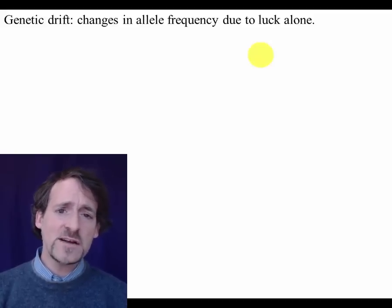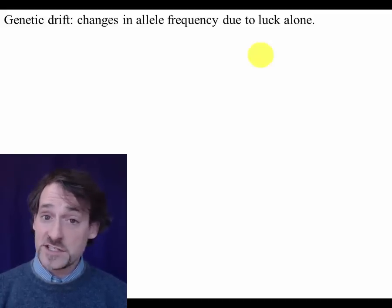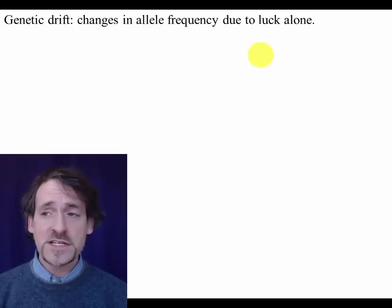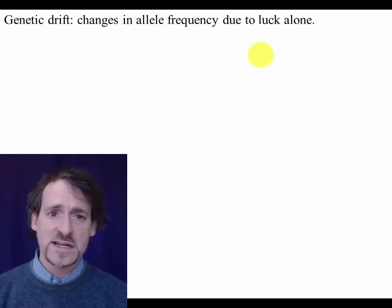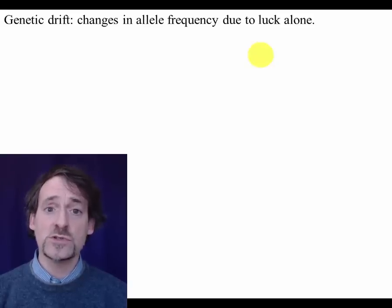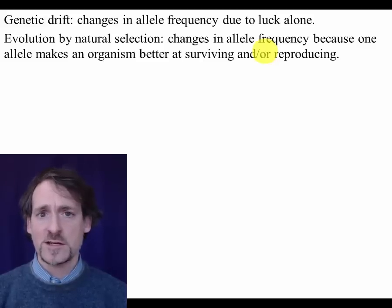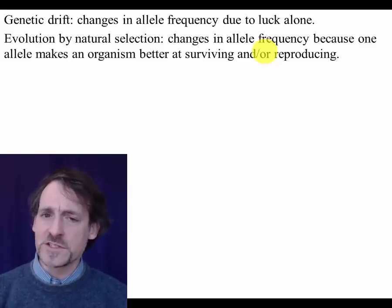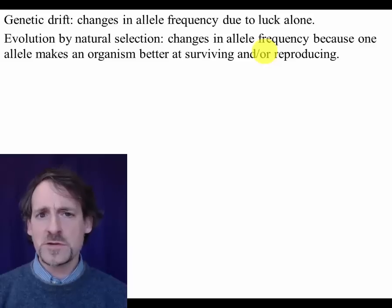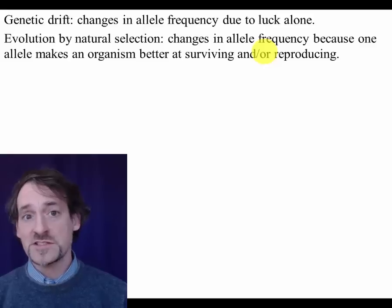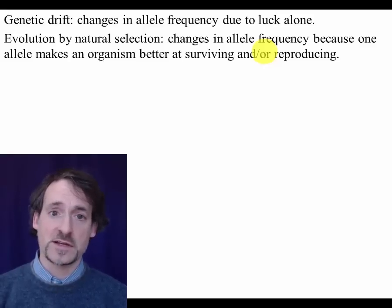Genetic drift is an evolutionary mechanism. It changes allele frequencies over the generations. But it's not because of some advantage that one allele or the other has. It's just changes in allele frequency due to luck alone. One of the misconceptions that I often hear about evolution is that people think that evolution is just random chance. Well, genetic drift is random chance. But evolution by natural selection is not. Evolution by natural selection is very systematic. Genetic drift is when you start thinking about luck.